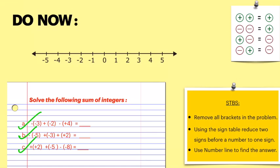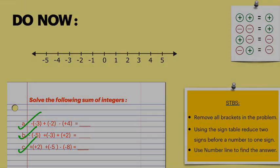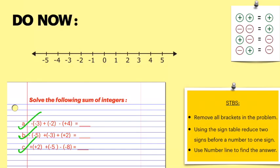Next we have a few more questions — these three questions are for you to do. Pause the video, use the number line, the sign table, and all the steps to solve these questions. The answers: the first one is minus three, the second is plus four or just four, and the last one is plus five or just five. Make sure to do all the steps, not just write the direct answer.